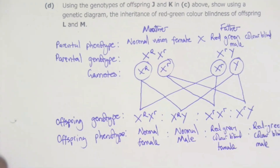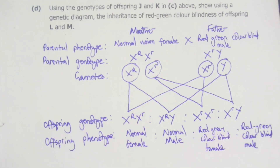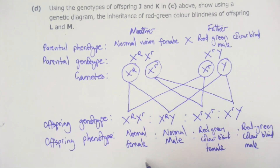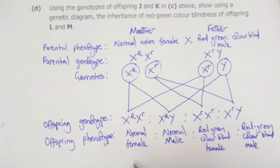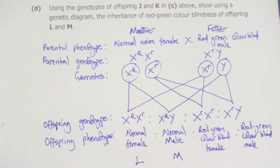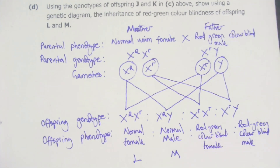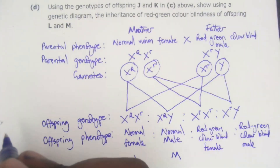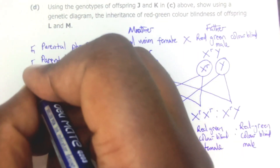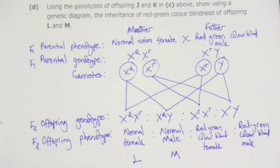Step five is to write the offspring phenotypes. X^R X^r is a normal vision female. X^R Y is a normal vision male. X^r X^r is a red-green color blind female. X^r Y is a red-green color blind male. From the diagram, L is the normal female and M corresponds to the color blind offspring. J and K were F1, and L and M are F2. This completes the genetic cross.